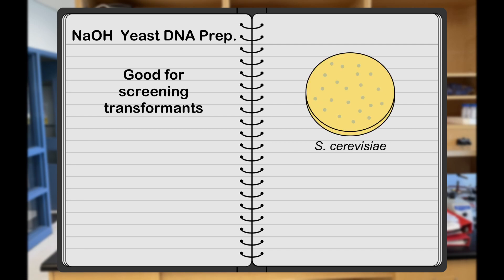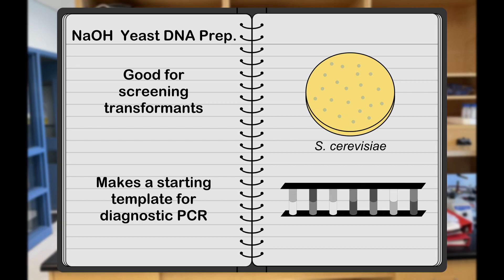This prep is good for screening transformed cells and makes a starting template for diagnostic polymerase chain reactions.